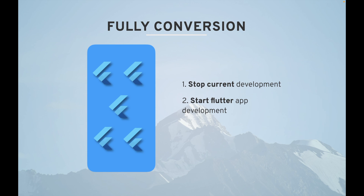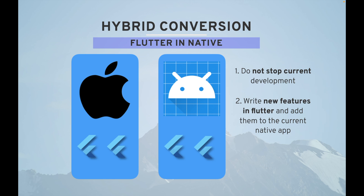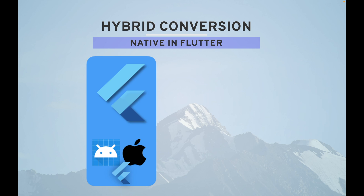After fully conversion, we have hybrid conversions. The first hybrid option is Flutter in native — you add Flutter modules into your native app. You don't have to stop your current development because you build new features in Flutter and add them into your existing native application. With that, you can write new features in Flutter and add them to the current native app.